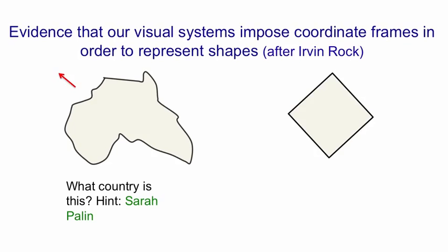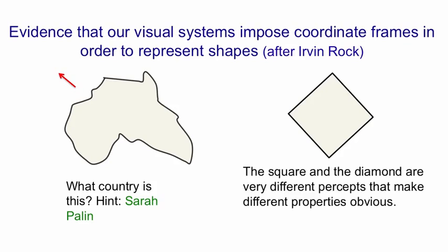Similarly, if I give you a shape like this one, you can perceive it as a square or you can perceive it as a diamond — those are two completely different percepts, and what you know about the shape is totally different depending on which way you perceive it. For example, if you perceive it as a tilted square, you're acutely sensitive to whether the angles are right angles. If you perceive it as an upright diamond, you're not sensitive to that at all — the angles could be five degrees off and you wouldn't notice. But you are sensitive to whether the corner on the left and the corner on the right are at the same height. These kinds of demonstrations are evidence that in order to represent shapes, we impose coordinate frames on them, because it's the same thing you're looking at, but the percept is totally different depending on what coordinate frame you impose.